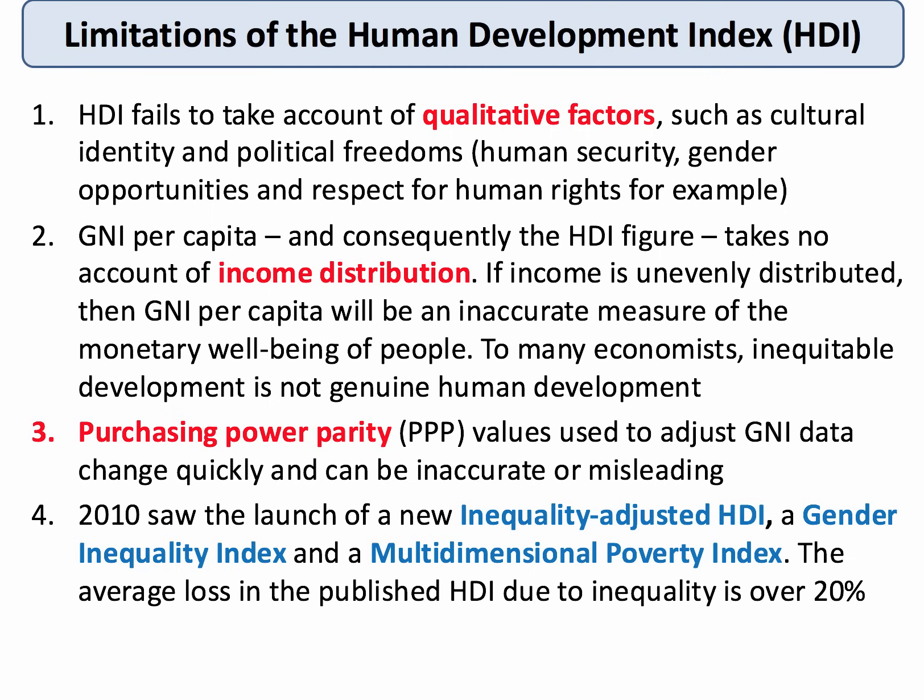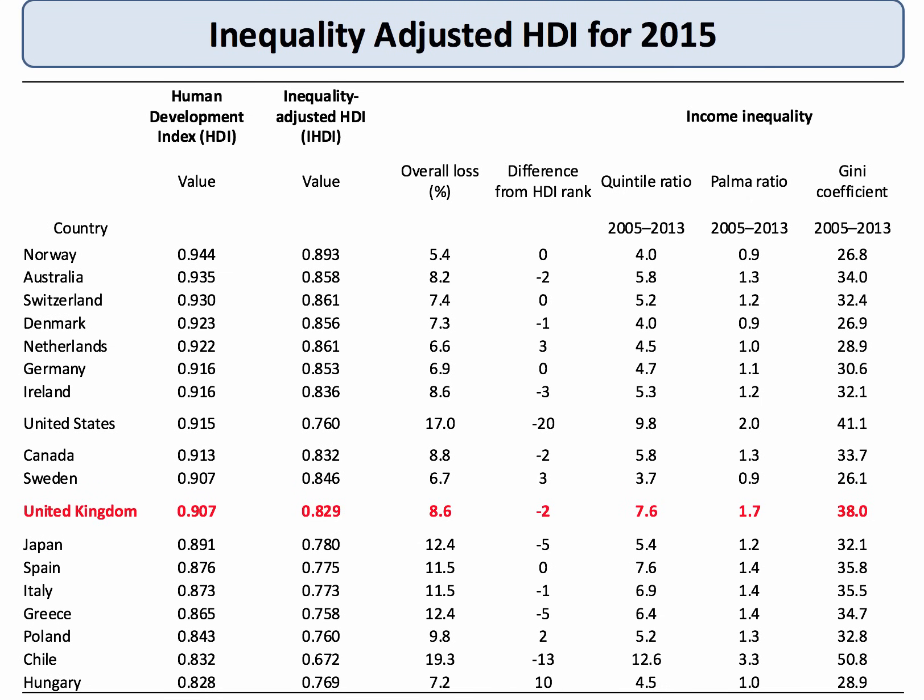In recent years, the United Nations Development Programme (UNDP) has published separate adjusted HDI data sets, including HDI adjusted for income inequality, HDI adjusted for multi-dimensional poverty, and crucially, HDI adjusted for the depth and scale of gender inequality.